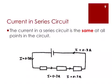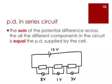The current in the series circuit is the same at all points in the circuit. If you were to put an ammeter into a series circuit, the current is the same everywhere no matter where you place the ammeter. The sum of the potential differences across all the different components in the circuit is equal to the potential difference applied by the cell. In this case, the EMF of the cell is 12 volts, and the potential differences of 8 volts, 1 volt, and 3 volts add up to give 12 volts, which is the EMF of the battery.